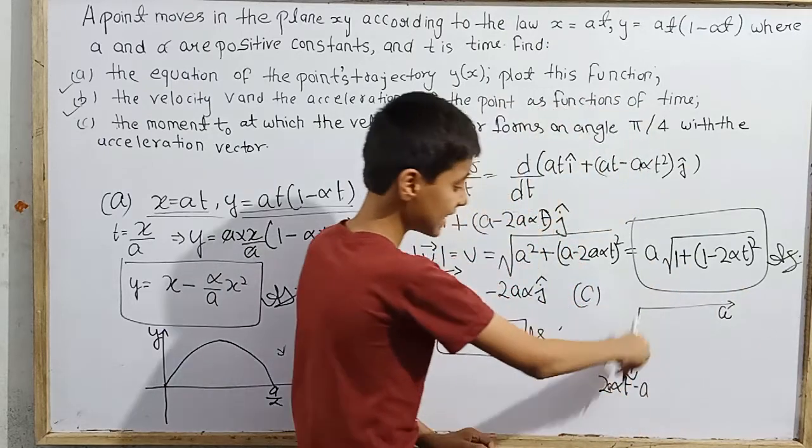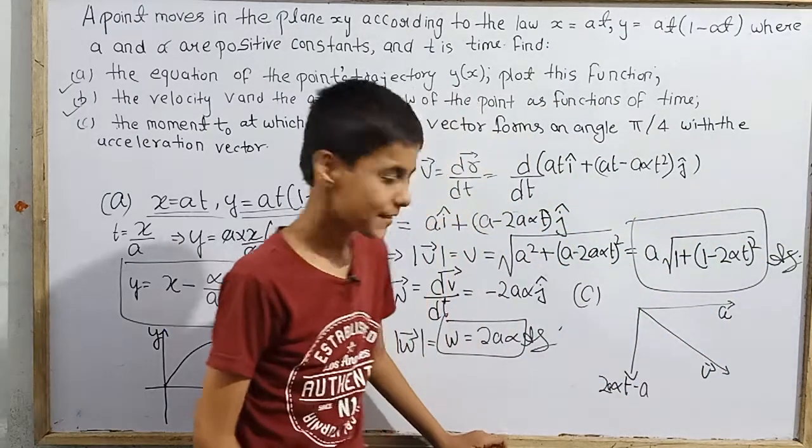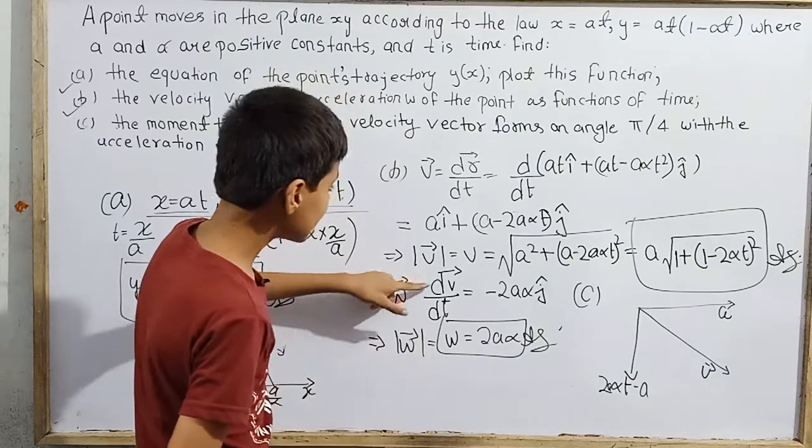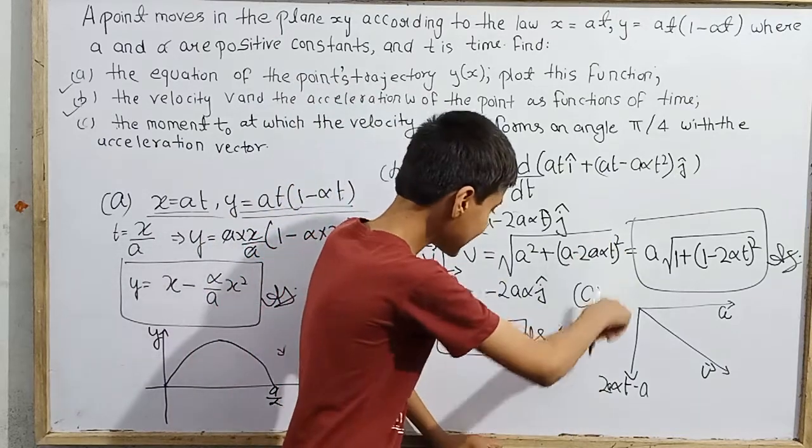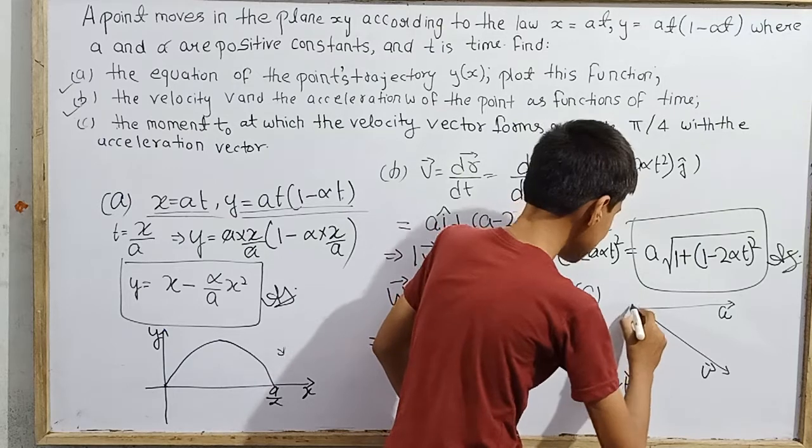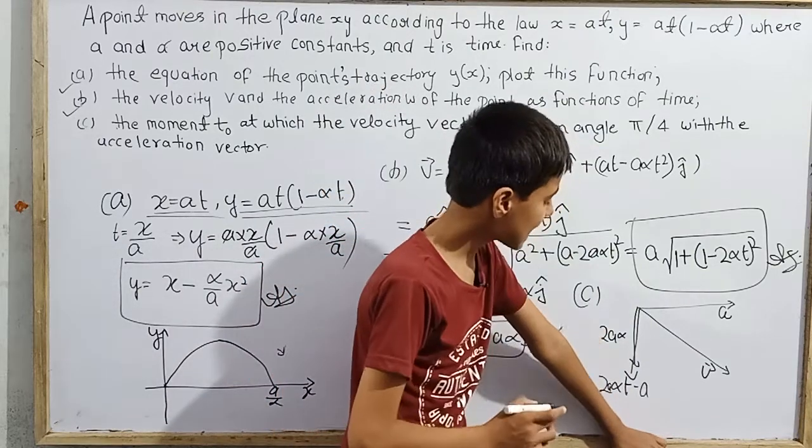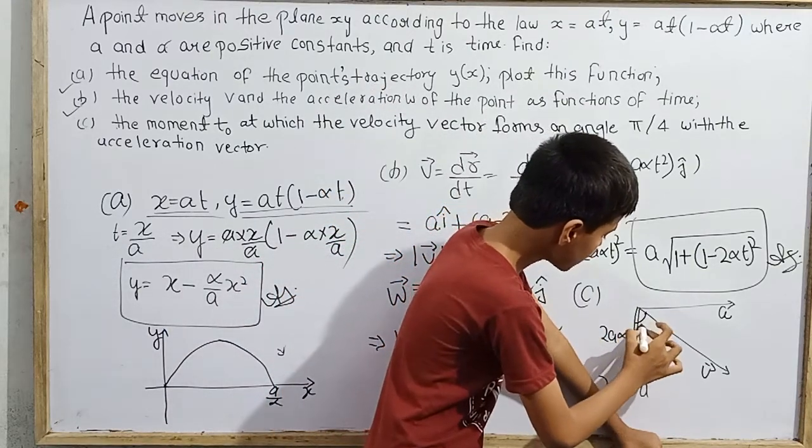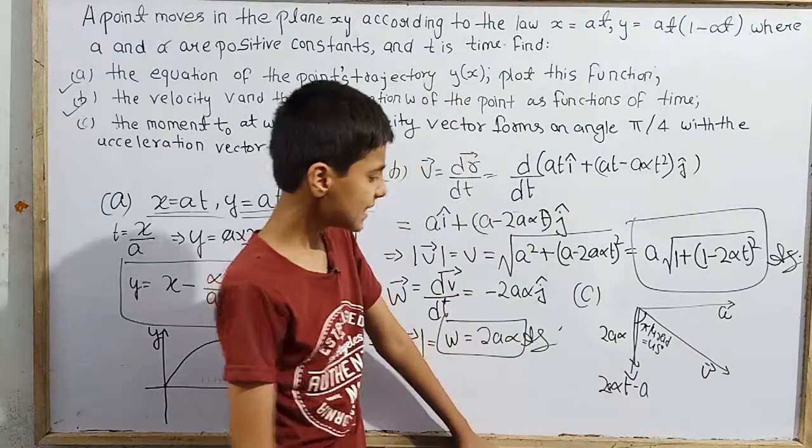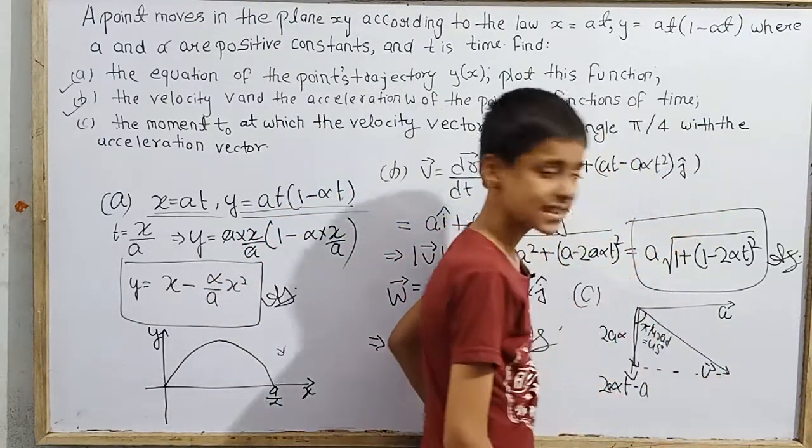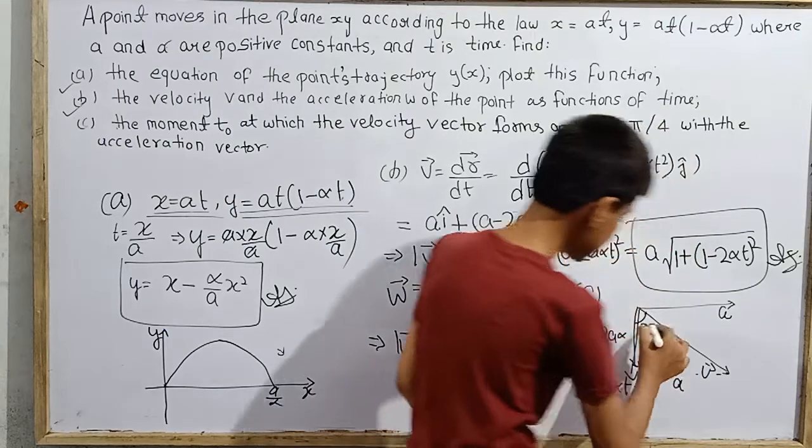The acceleration is -2aαj, constant in the negative y direction. The angle between these two vectors is π/4 radians, which is 45 degrees. I can form a triangle here. Using the velocity components: the x-component is a, and taking the magnitude of the y-component gives 2aαt - a (since it must be positive for the geometry). The angle θ satisfies tan(45°) = 1.